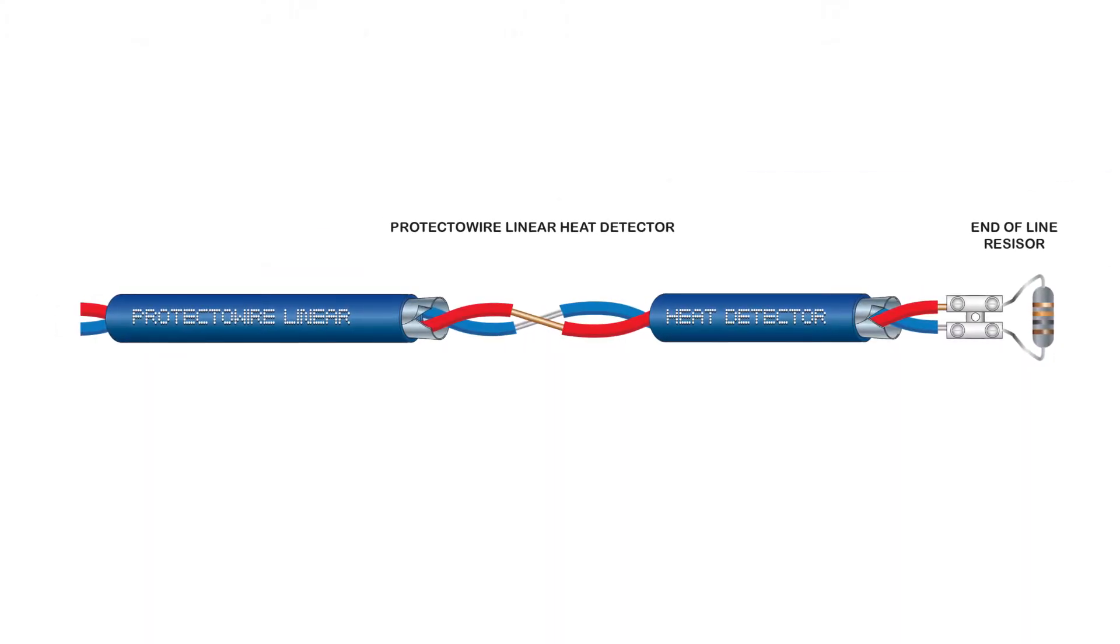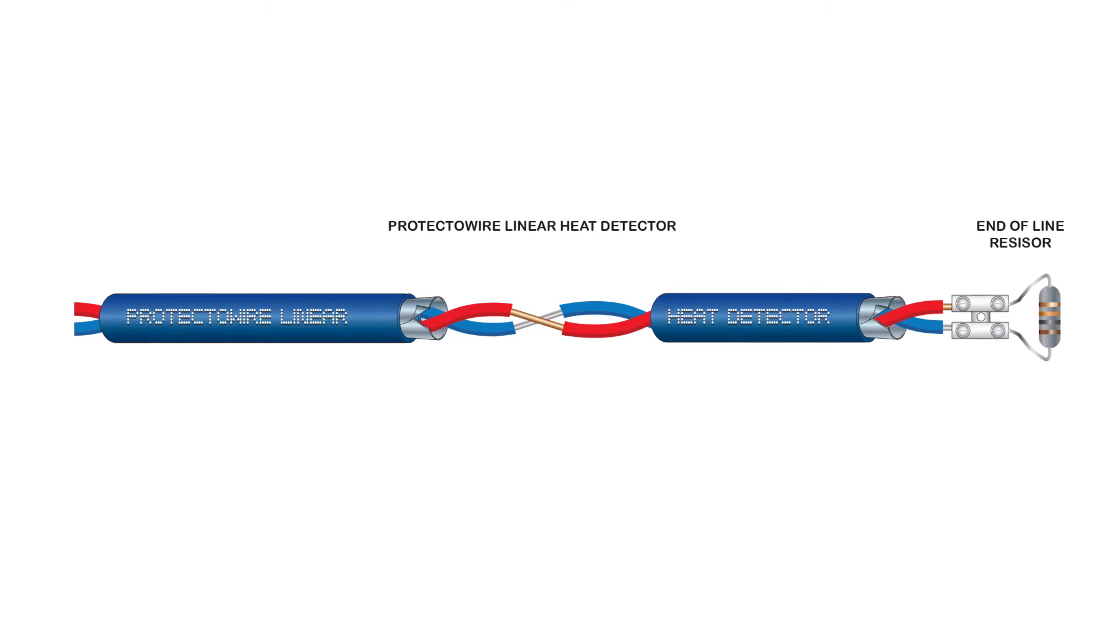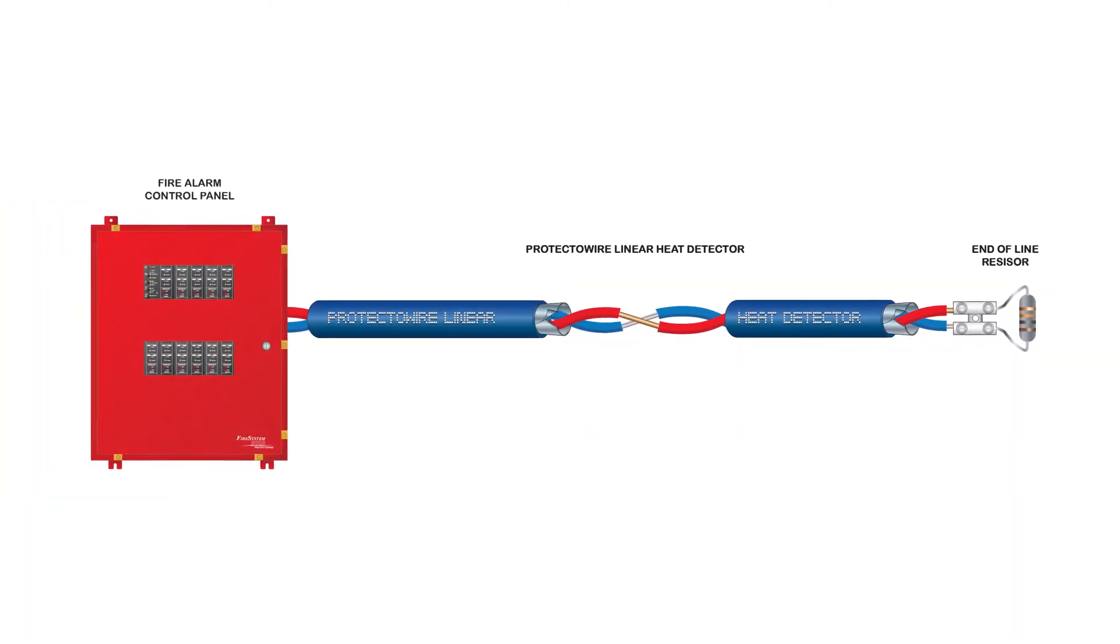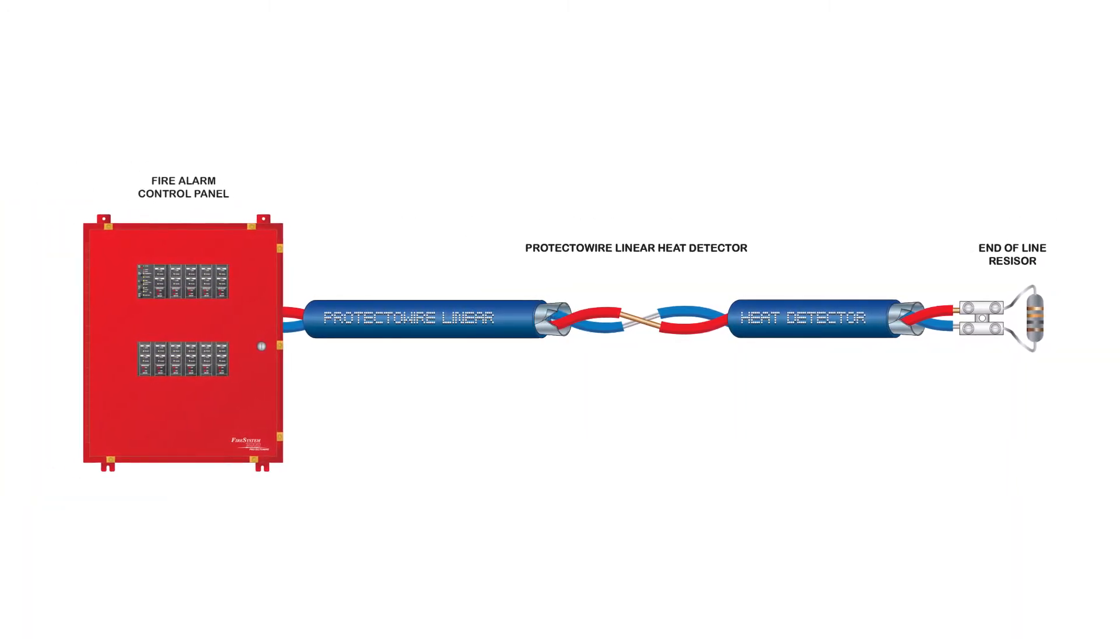Protectowire linear heat detector is a continuous heat detector. It is designed to be used on a compatible fire alarm control module or panel.